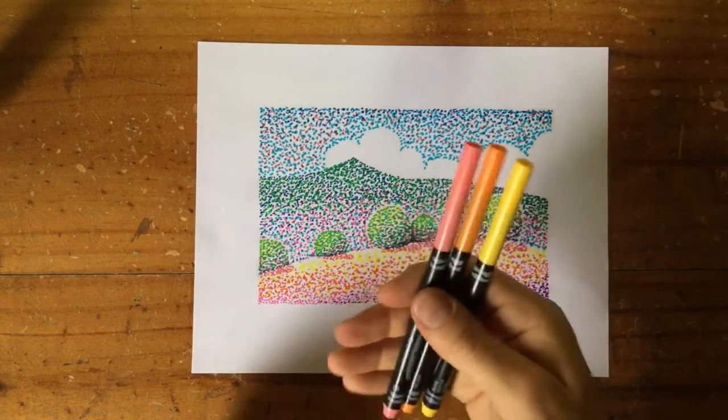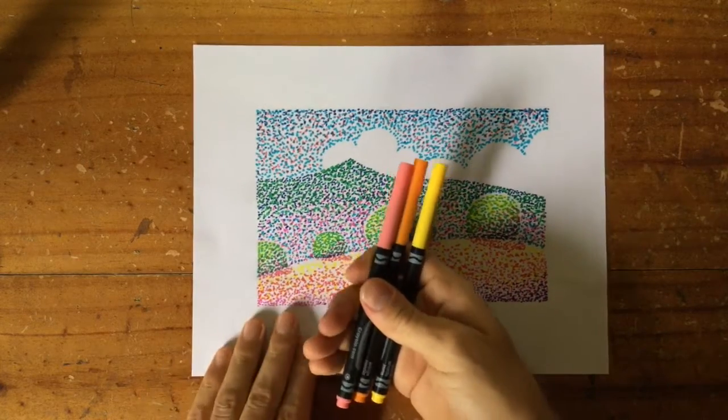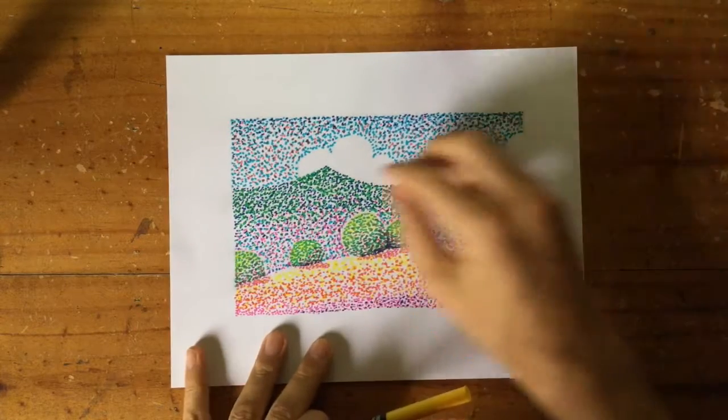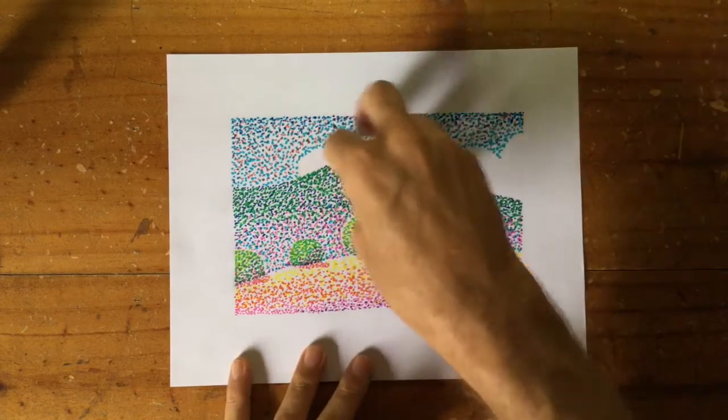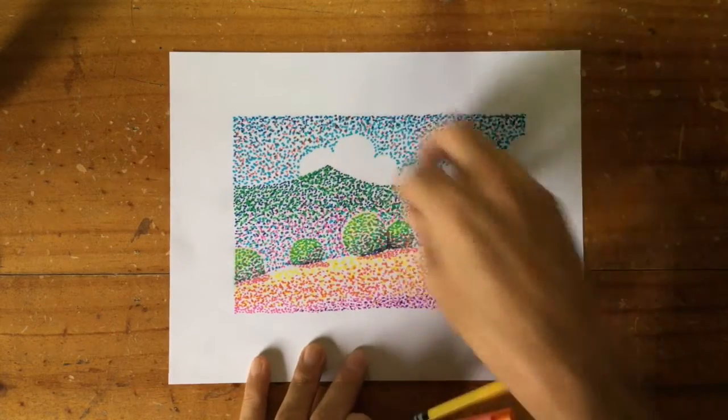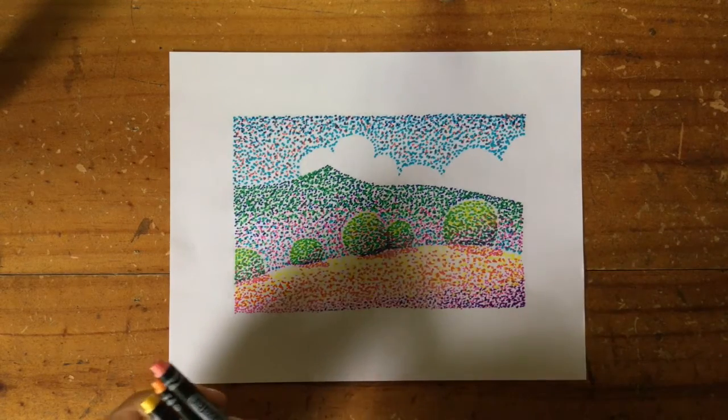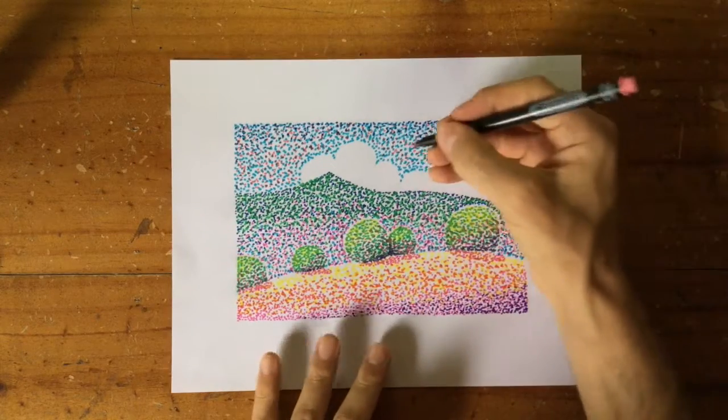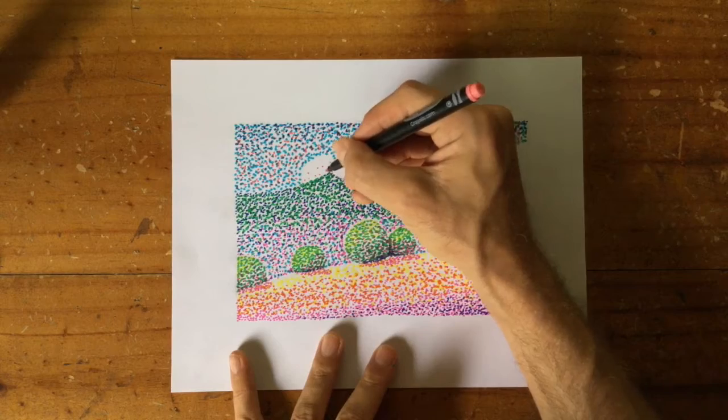For the clouds we're going to have orange, yellow, and pink. Lovely sunset cloud colors. But we also have to be careful not to overpower these clouds and make them too colorful, because we do need to leave some white there as well. So let's start with the pink. And just keep the dots really spaced out.